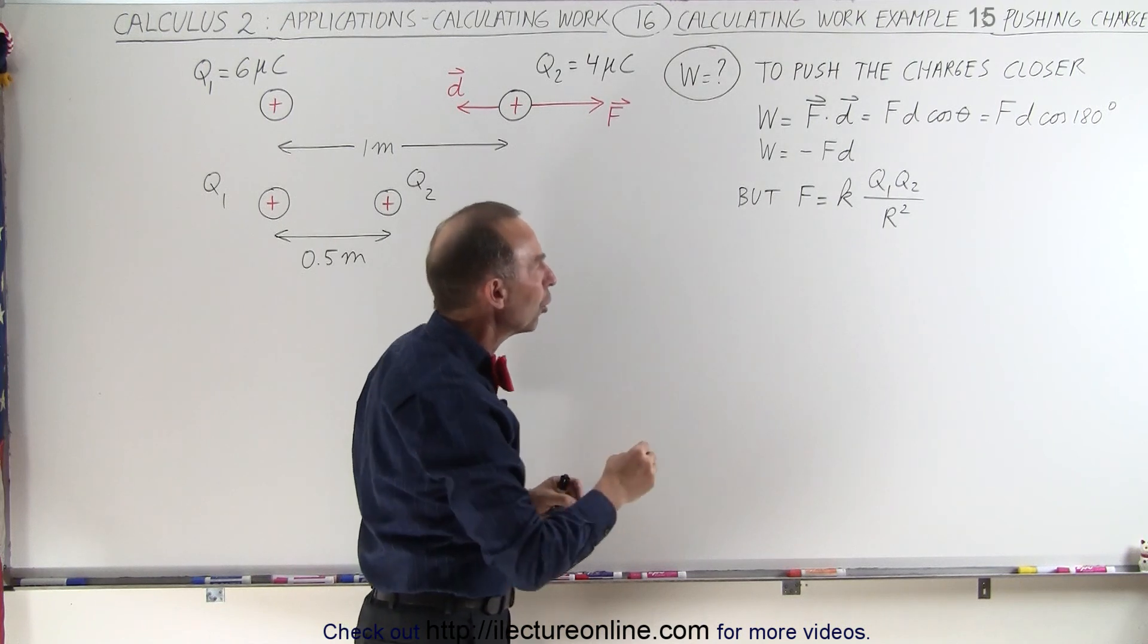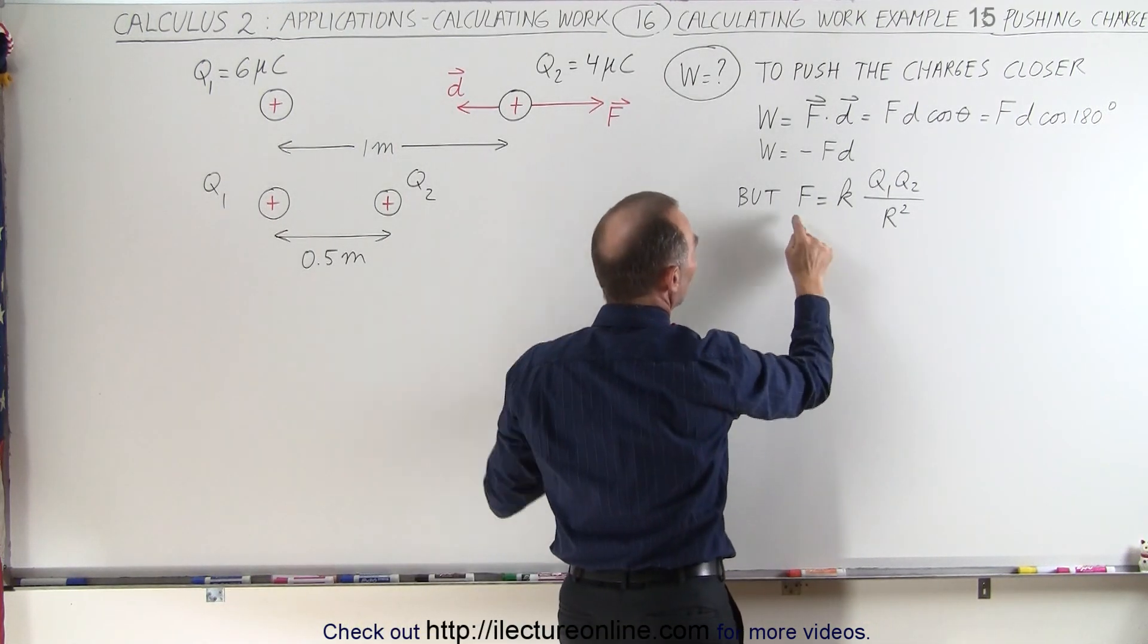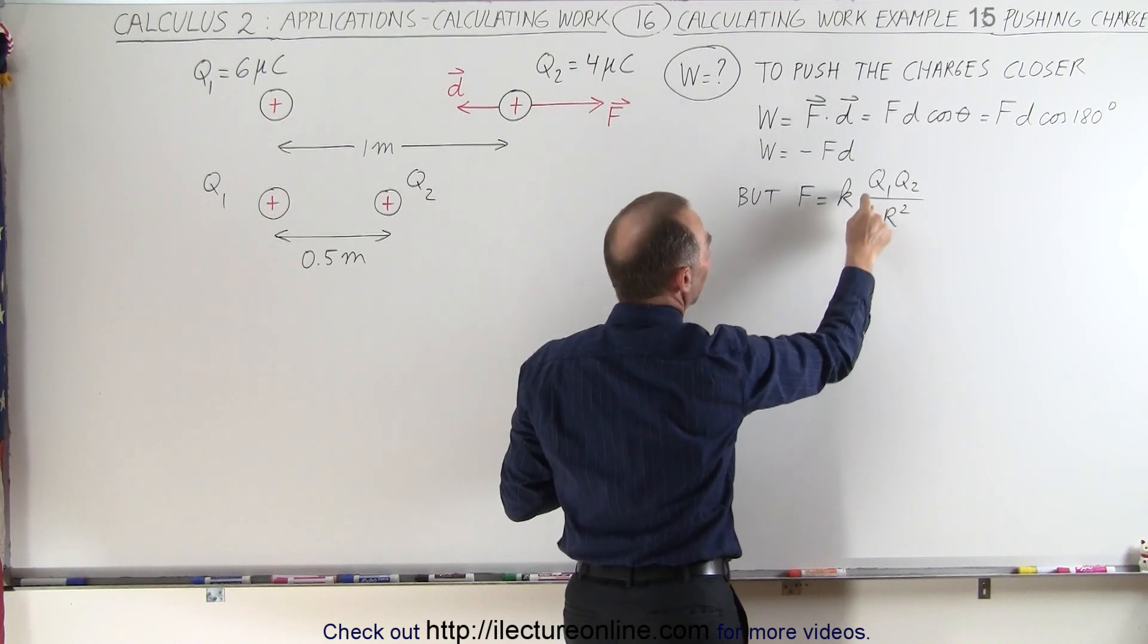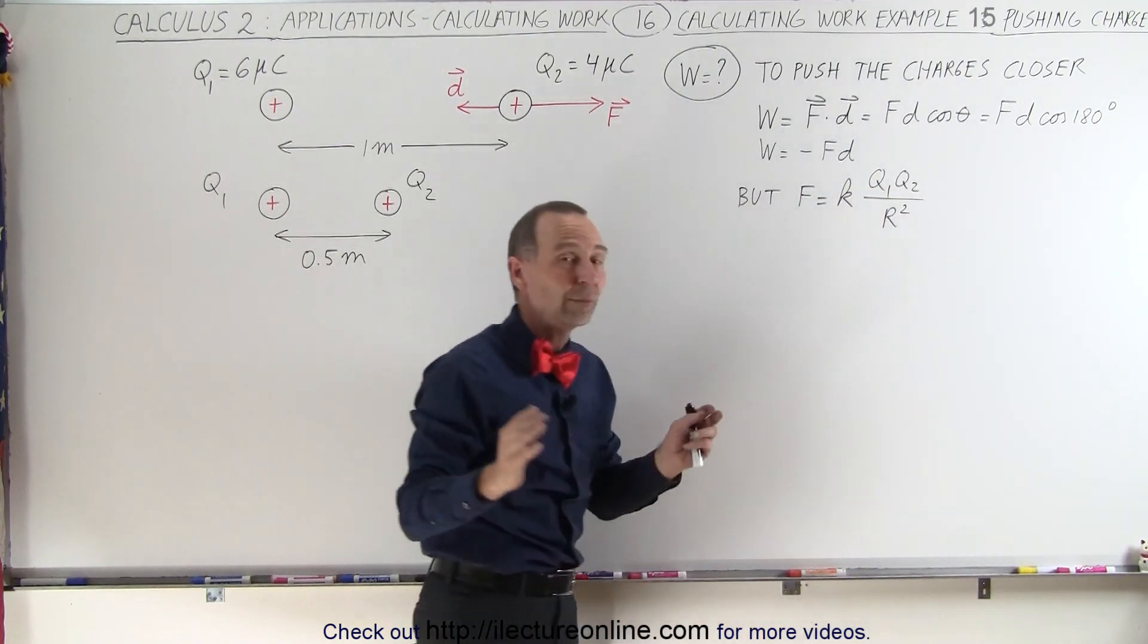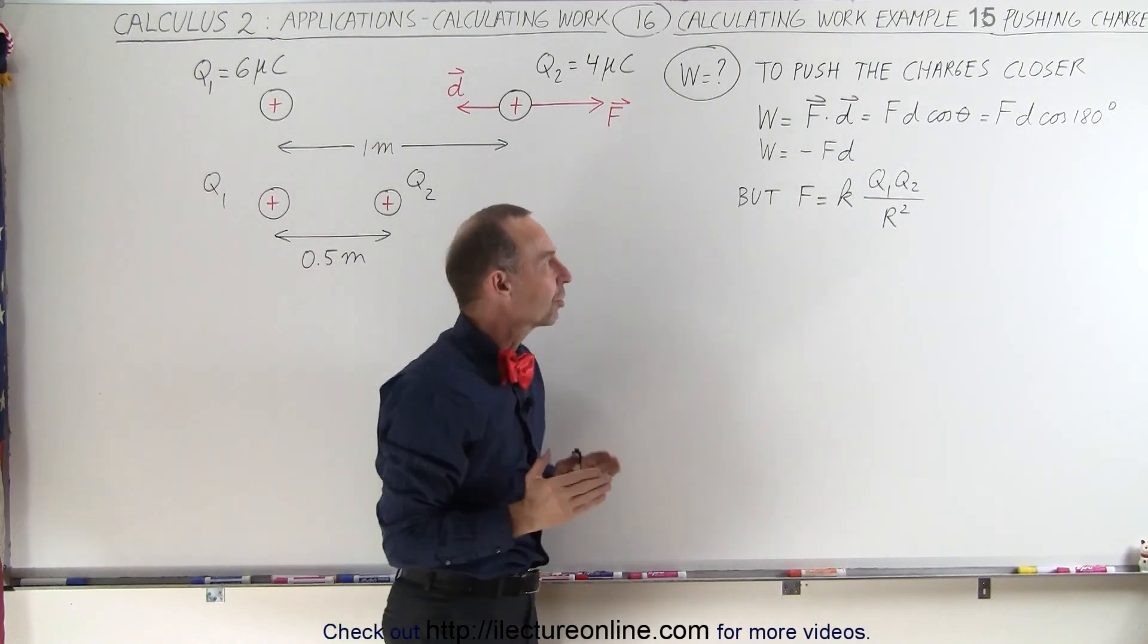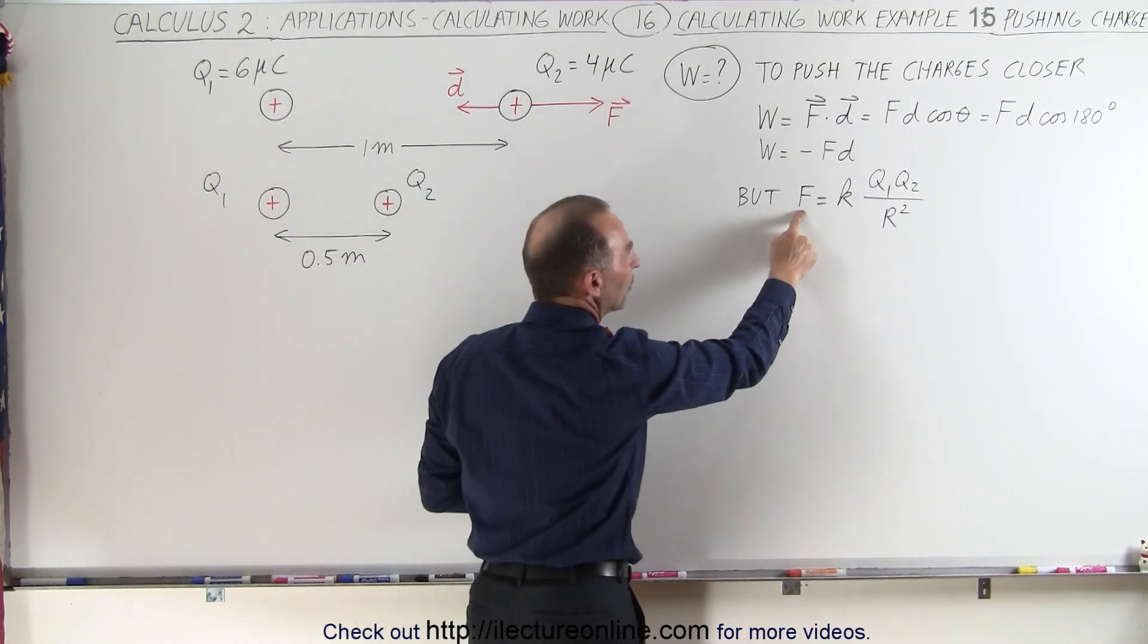And using Coulomb's law, we know that the force between two charge objects is equal to k times q1 times q2 divided by the distance squared. So we know that as we bring the two objects closer, the force will increase accordingly.